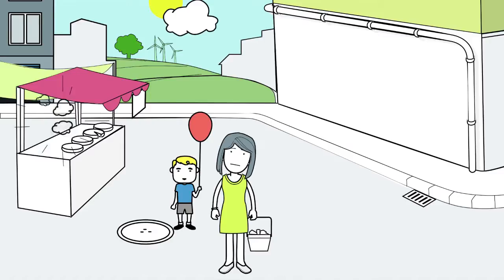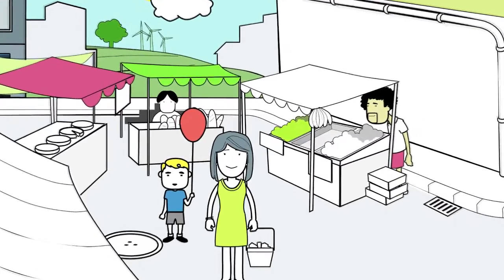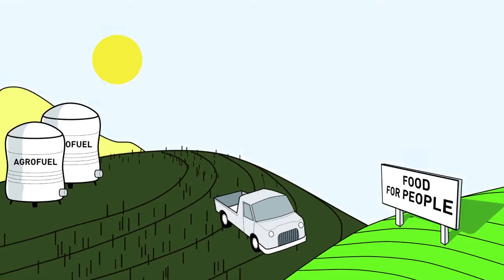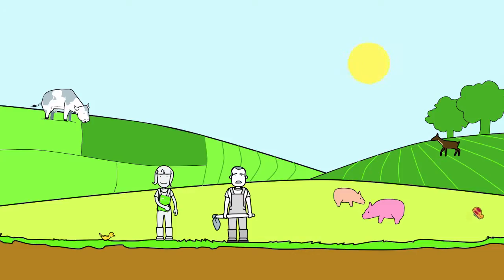It safeguards local markets in the south, instead of dumping subsidized products from Europe on them. And it prioritizes the use of land for food production, rather than industrial commodities, while ensuring women and men have an equal voice in decision making.